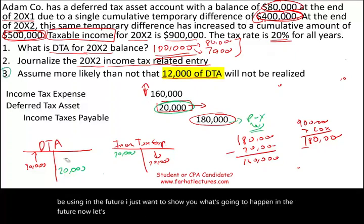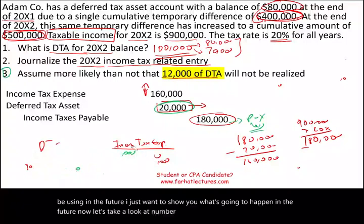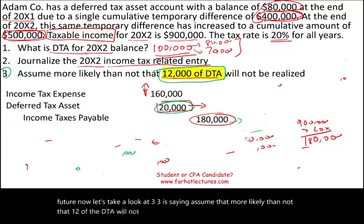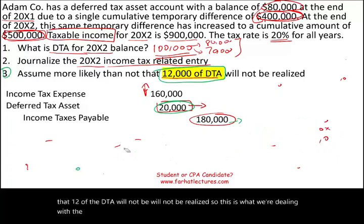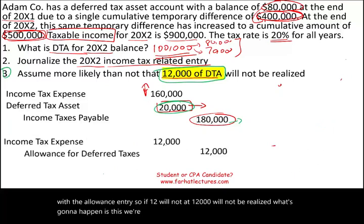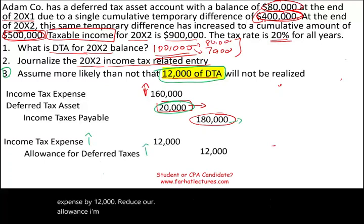Now let's look at question three. It says assume that more likely than not, 12% of the DTA will not be realized. This is the allowance entry. If 12% — meaning $12,000 — will not be realized, we're going to increase our income tax expense by $12,000 and increase our allowance for deferred taxes by $12,000.